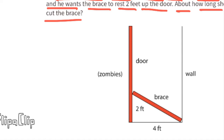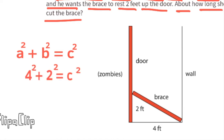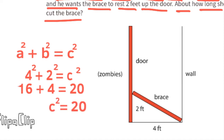So we can use the Pythagorean theorem: a² + b² = c². Four squared plus two squared equals c squared, or the length of the brace. Four squared is 16, two squared is 4, and 16 plus 4 is 20, so c² = 20.